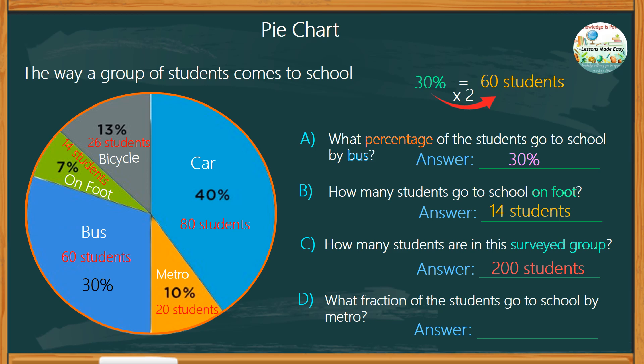So for our last question, what fraction of the students go to school by metro? That would be 20 out of 200, or 1 over 10. Were you able to answer most questions correctly? I'm sure you did great.